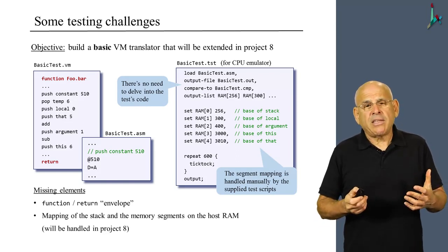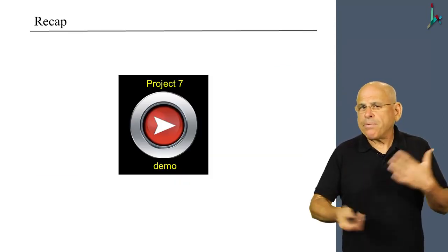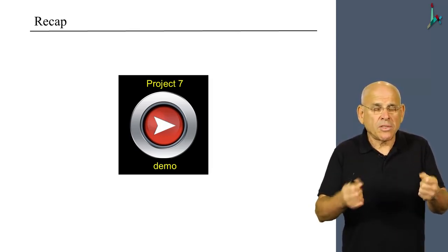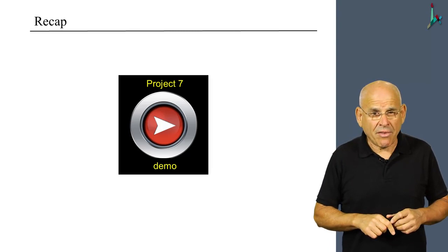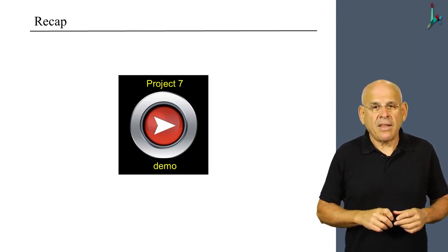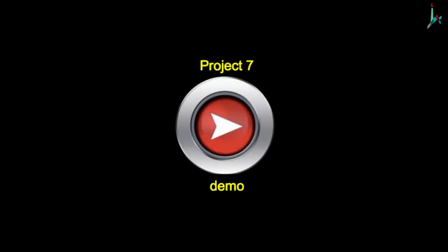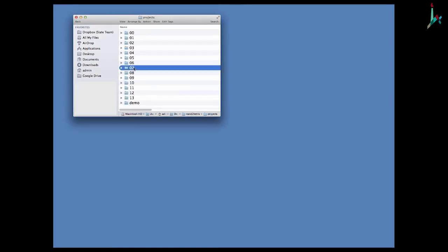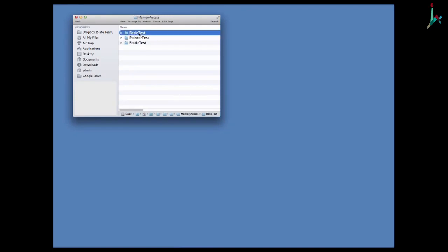What I'd like to do next is recap and go through everything in the context of actually using the tools you have to use in Project 7 — this will be done in the next video clip. The purpose of this demo is to walk through the steps you have to go through when working on Project 7. I have here my NAND2Tetris folder. Let's go into Project 7, then into Memory Access and then into BasicTest.